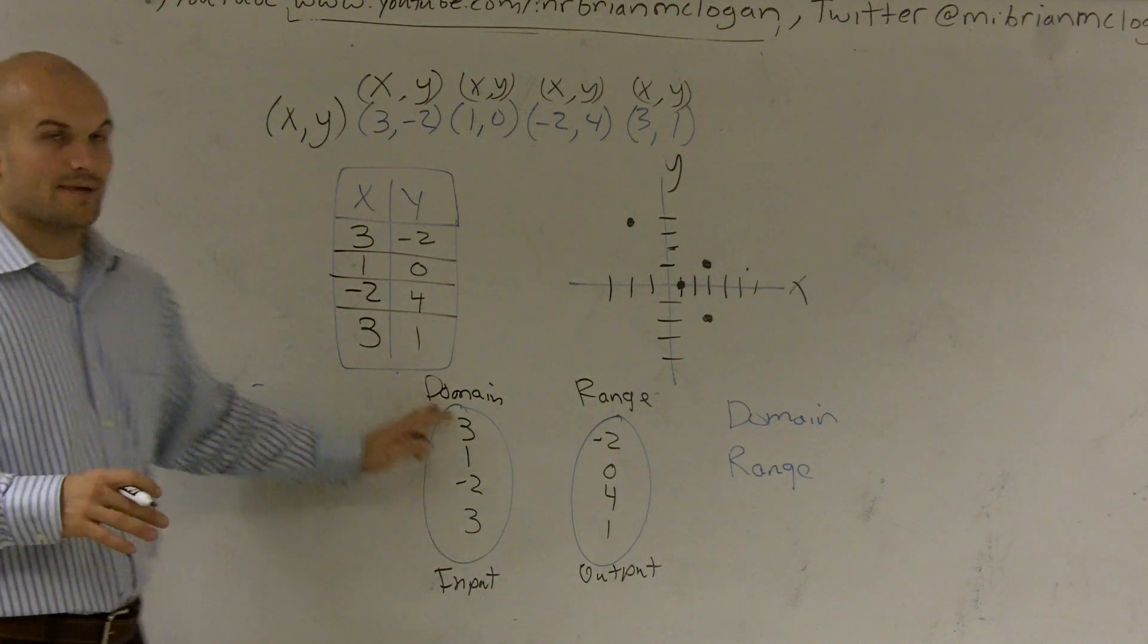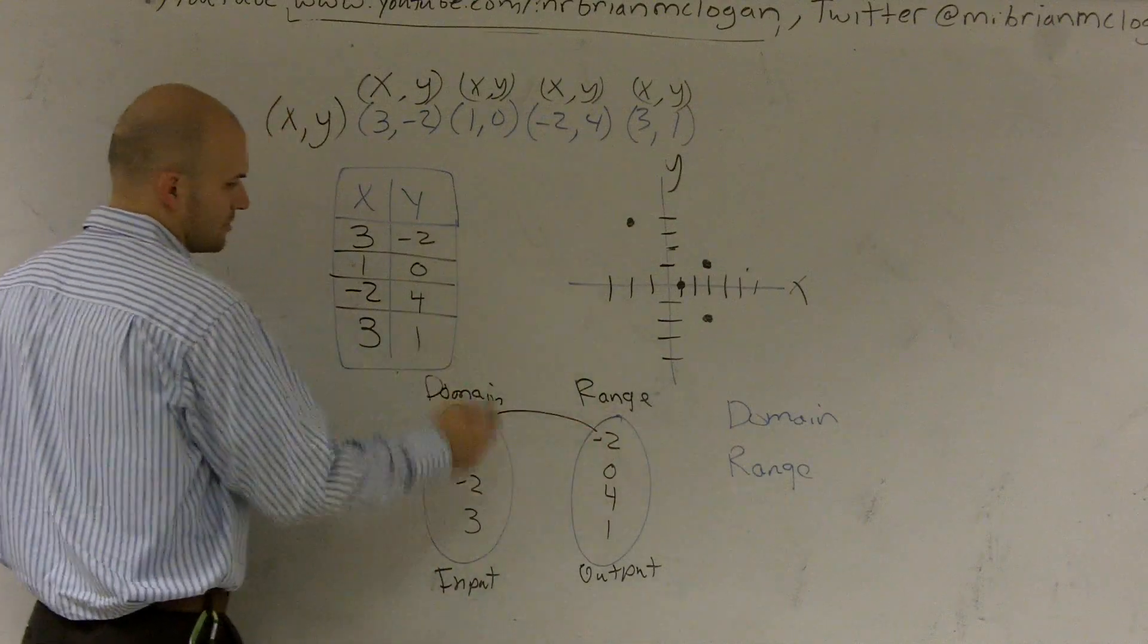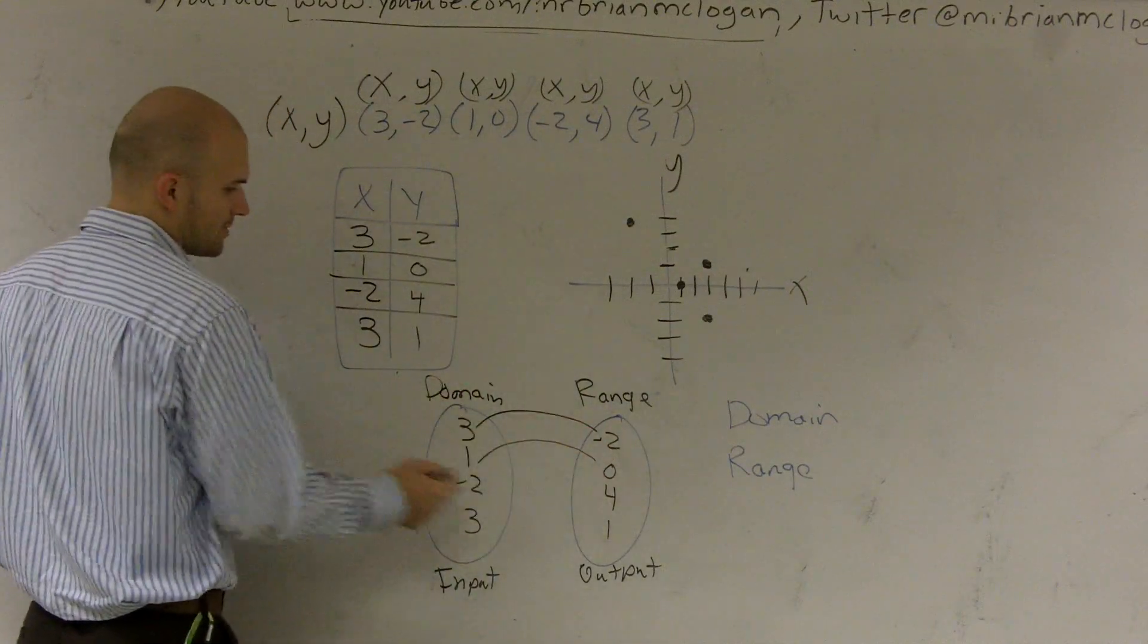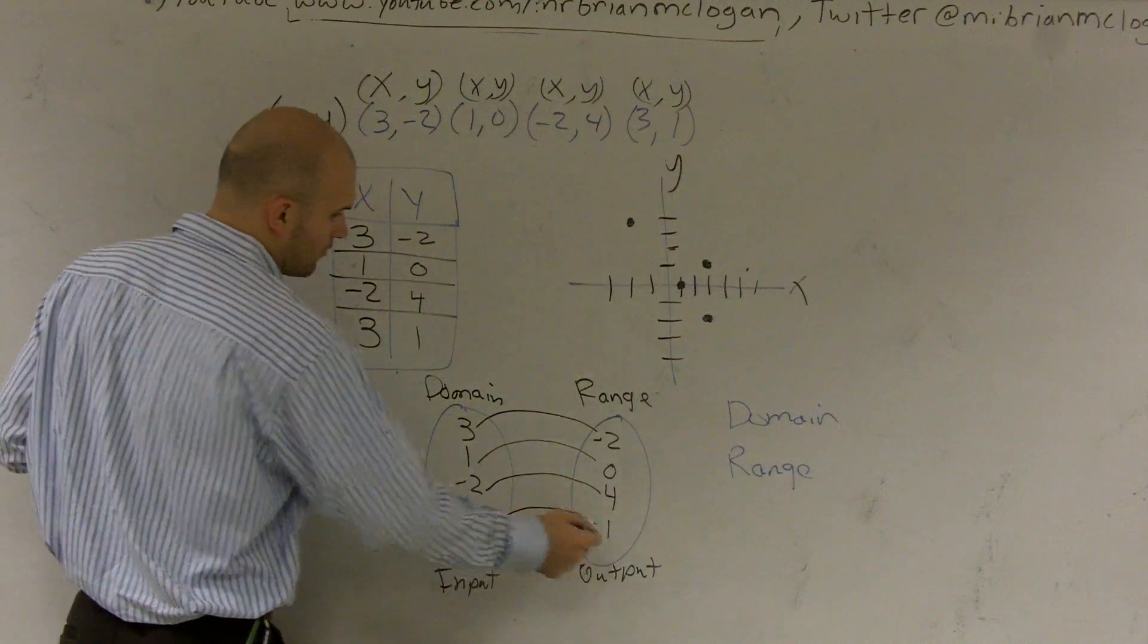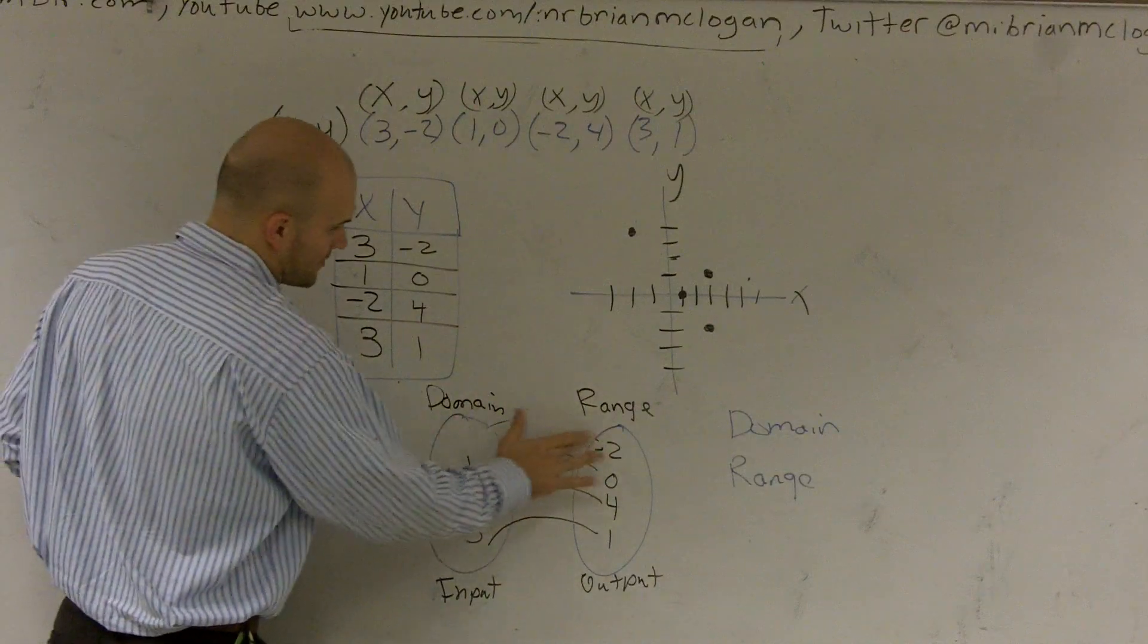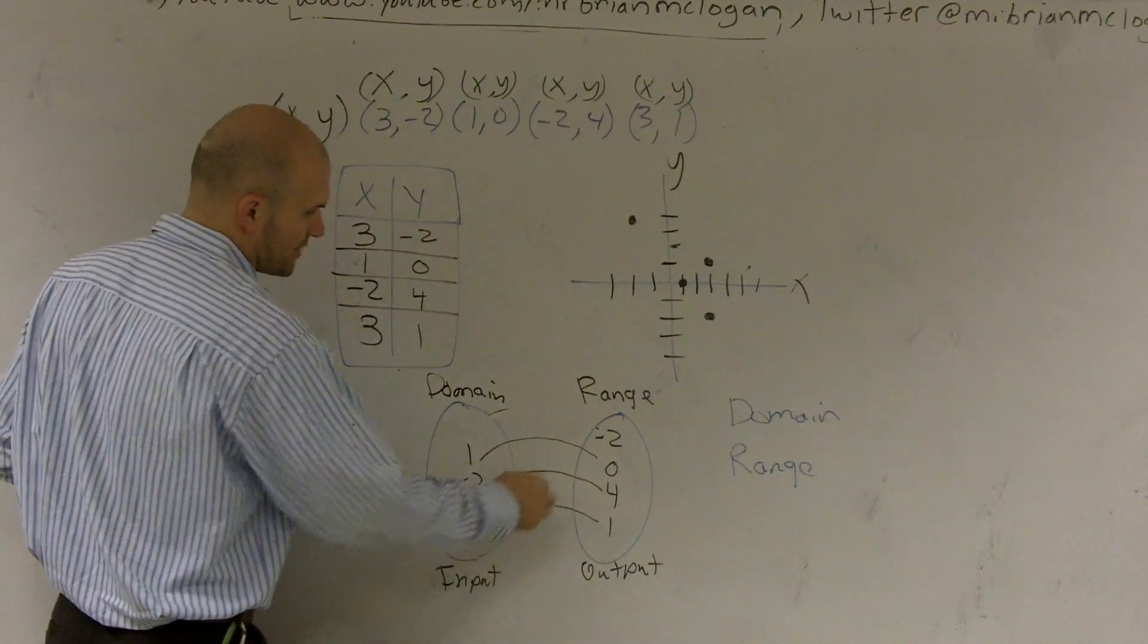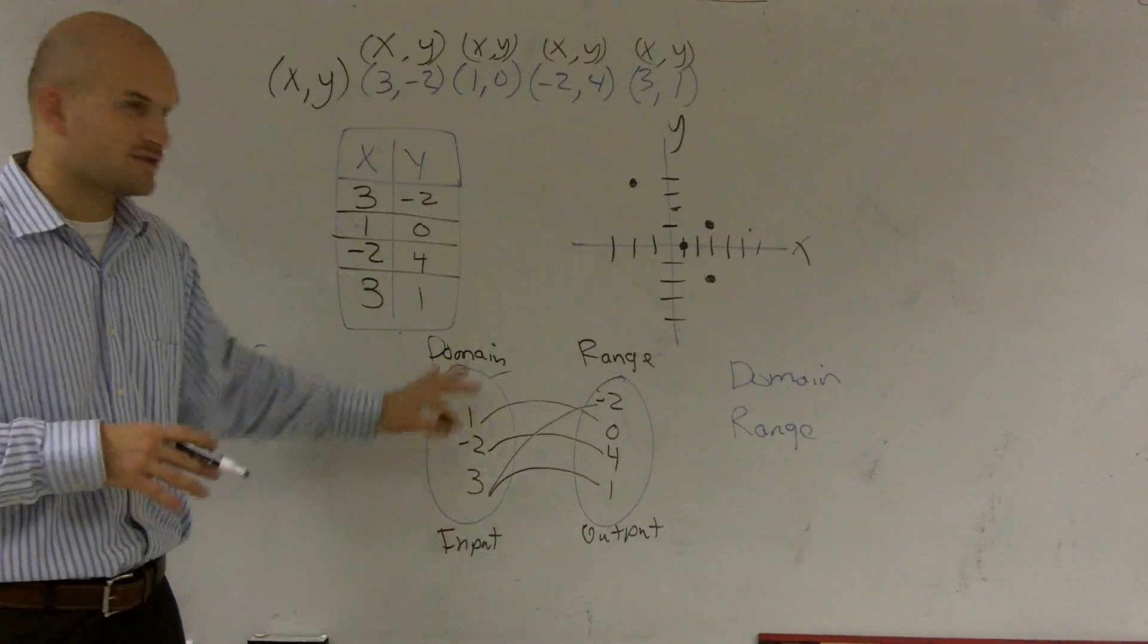For our domain, it's going to be your X values. So it would be 3, 1, negative 2, and 3. And over here you have negative 2, 0, 4, and 1. When I'm dealing with the relation, I'm going to map 3 to negative 2, 1 comma 0, negative 2 to 4, and 3 goes to 1. Actually, 3 goes to 1 and 3 goes to negative 2. That's just with that relation.